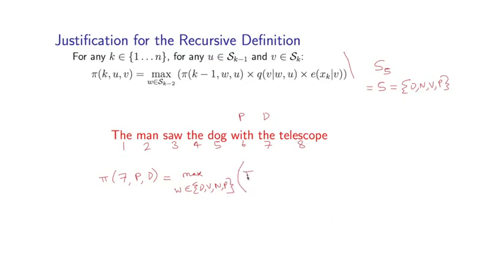And then I have pi of (6,w,p), and then I have q of d given w,p, and then finally I have e of xk - k is 7 in this case, so this is the 7th word in the sentence there - given d. So this is the expression which we can use to calculate pi(7,p,d).